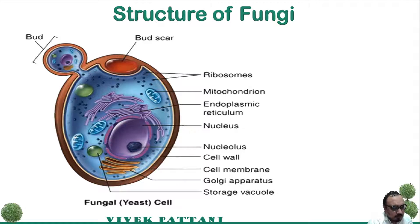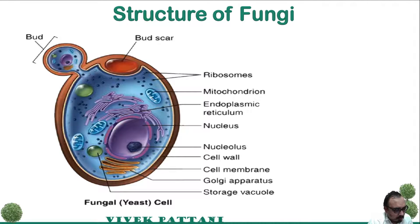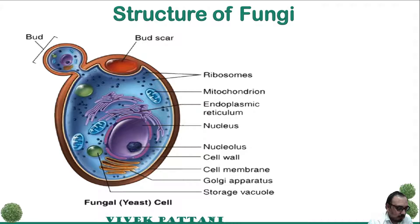Yeast are commonly of oval shape, though some are elongated and some are spherical. Each species has a characteristic shape, but even in pure cultures there is considerable variation in shape and size depending on the age and environment of the individuals. Yeast basically have no flagella or other organelles for locomotion.